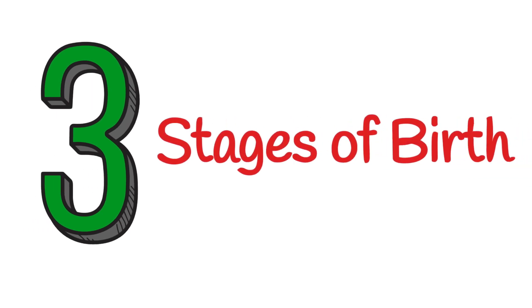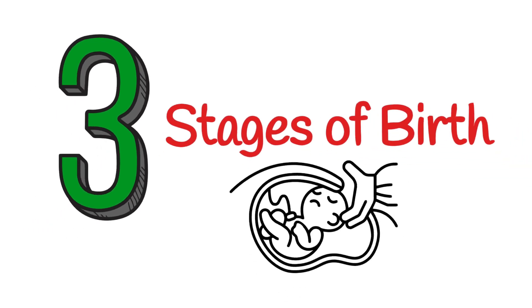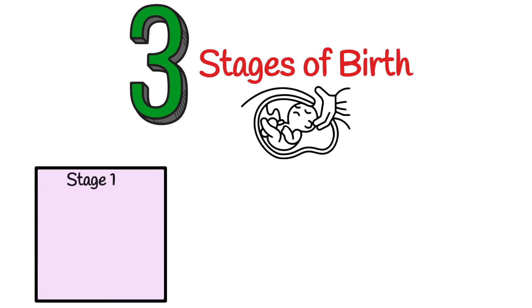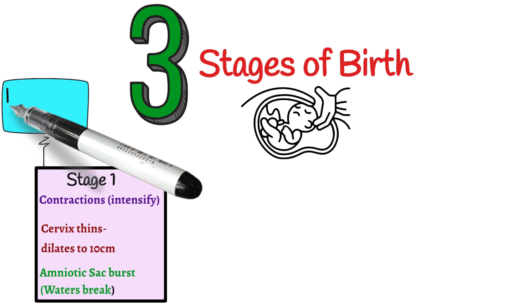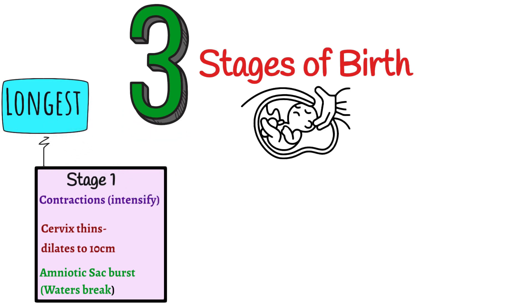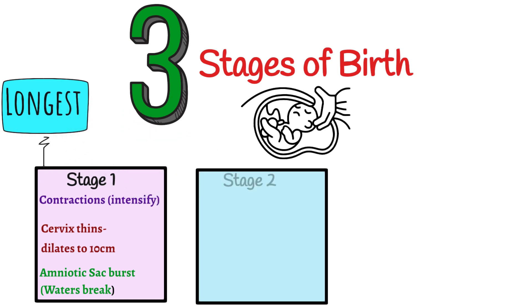When answering a question on birth, you must know that there are three stages of birth and be able to state something about each. Stage one is where contractions intensify and the cervix thins and dilates to 10 centimetres. The amniotic sac bursts releasing the amniotic fluid — this is the waters breaking. Stage one is the longest of the three stages.